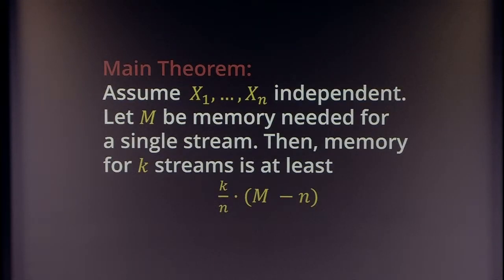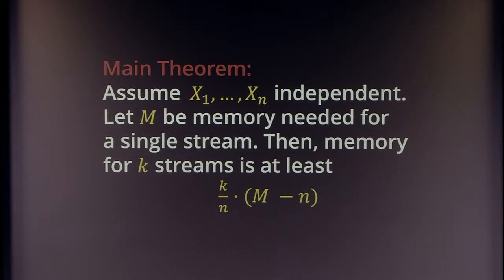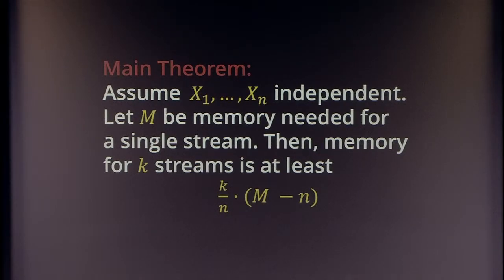Let me now come to the main theorem. If your input stream x1 to xn is independent and you require average memory m to compute the function on a single stream, then for k streams the memory required is at least this quantity. When k is really large and the memory required to compute the function on a single stream is at least n, you get something non-trivial. I'll discuss improving the parameters and open questions at the end. In the rest of this talk I'll give you a proof of this theorem, and for that I need one basic fact from information theory.